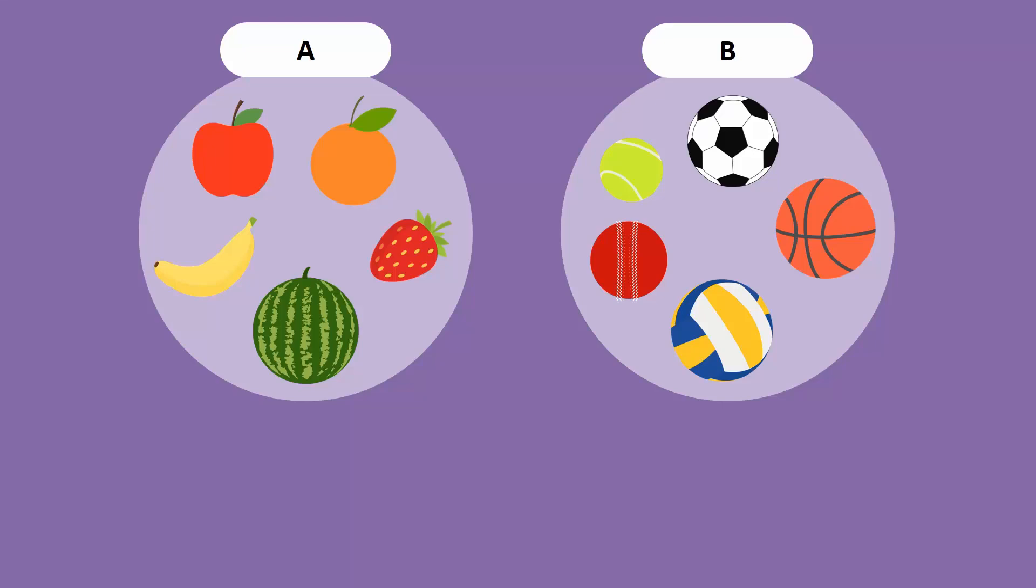Observe that there are five elements in both sets. When the number of elements are equal in two sets, we say that there is one-to-one correspondence between the elements of both sets.